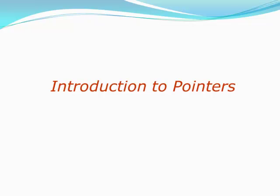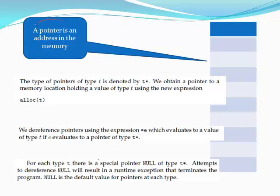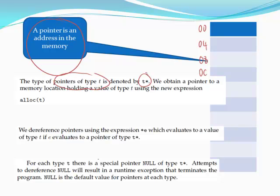What is a pointer? The pointer is essentially an address in the memory. If you think about memory, memory has addresses — for example, counting by fours: 0, 4, 8, and then 12 would be 0xA, 0xB, 0xC, and so on. You can think of a pointer as an address in memory, and the pointer type T is defined by T* in C.